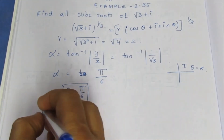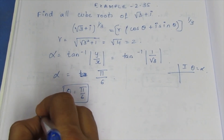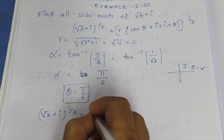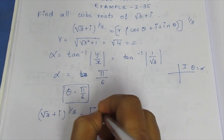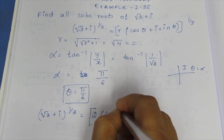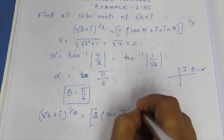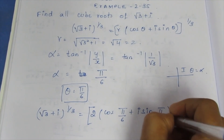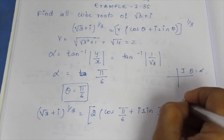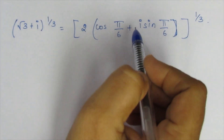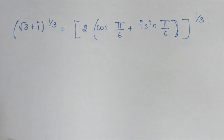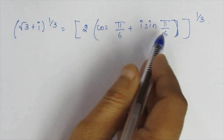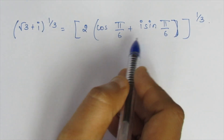So we substitute: (√3 + i)^(1/3) with r = 2 gives 2[cos(π/6) + i sin(π/6)] raised to the whole power 1/3. Now we introduce 2kπ into the angle. We introduce 2kπ — how many values are available? We add 2kπ to the angle directly.